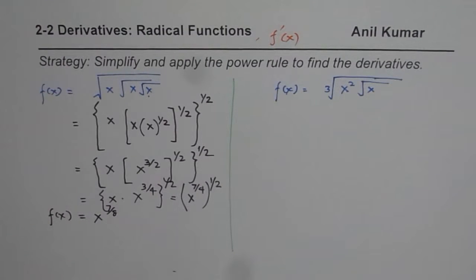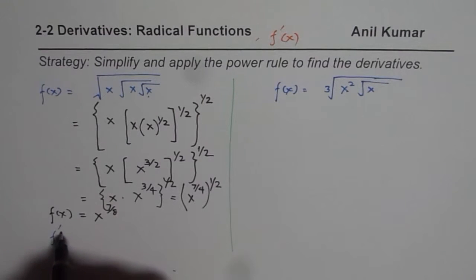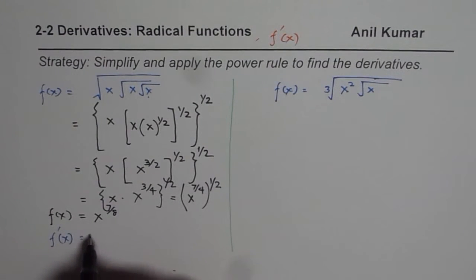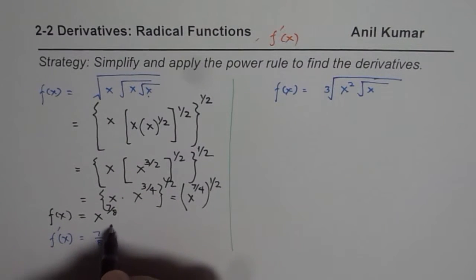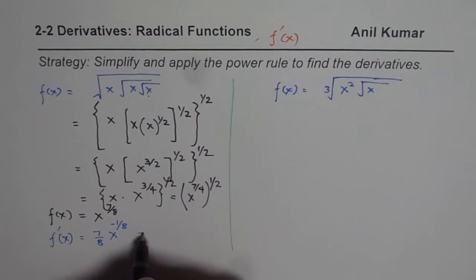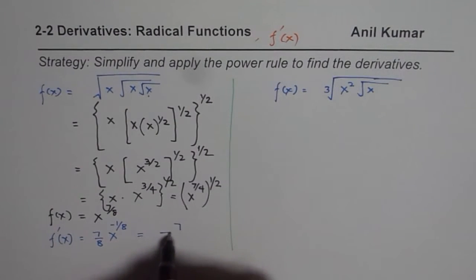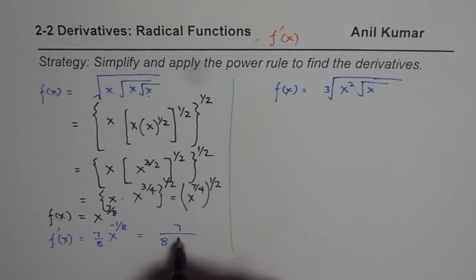Now I think it is easy to find the derivative. So derivative will be f dash x. Applying the power rule, we get 7 over 8, x to the power of 7 over 8 minus 1 which is minus 1 over 8, which you could write as 7 over 8 x to the power of minus 1 over 8. So that becomes your answer. That is how you could actually solve such questions.